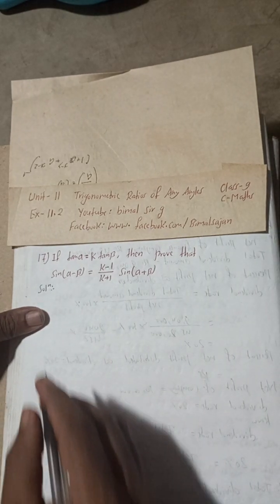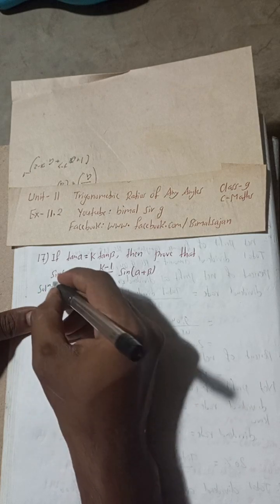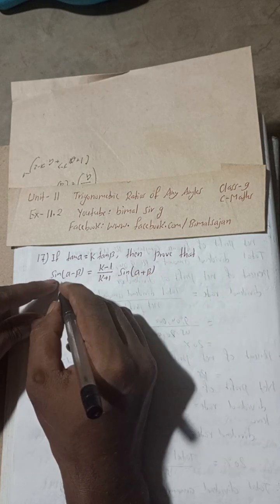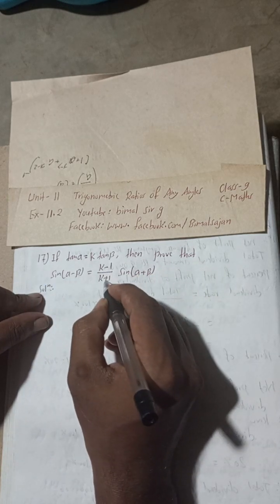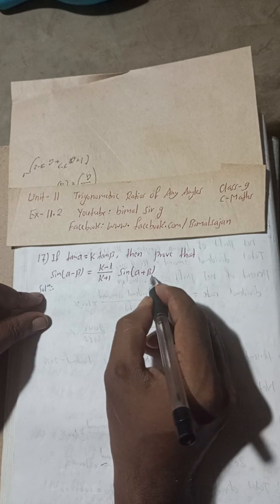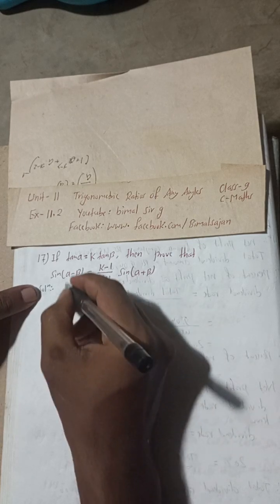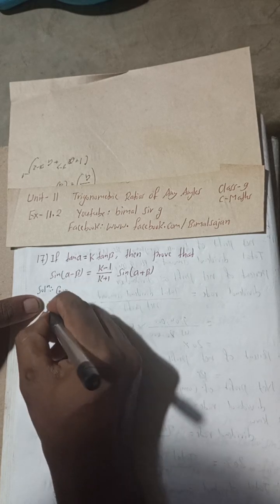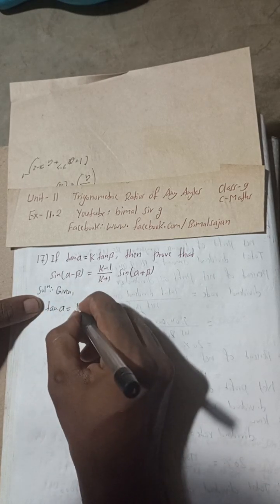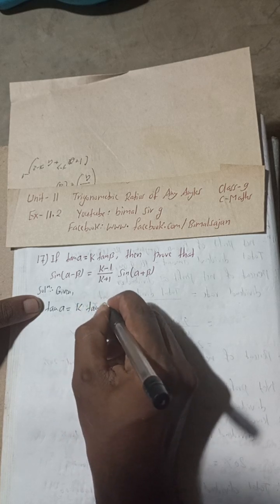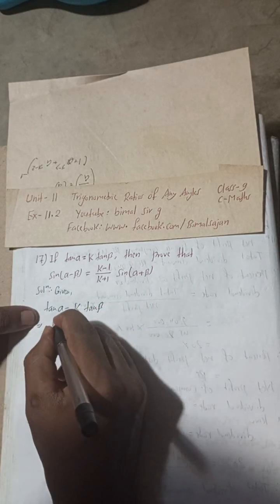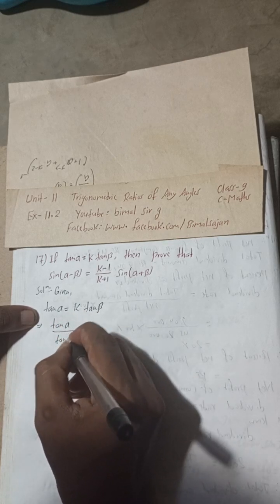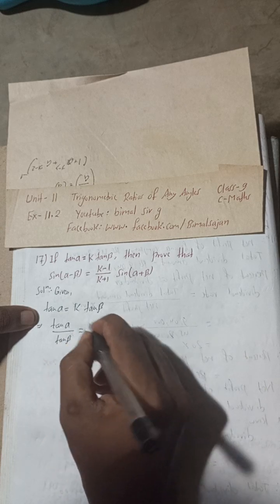Let's begin the solution. Now, if tan α is equal to k tan β, then prove that sin(α − β) is equal to (k − 1)/(k + 1) · sin(α + β). So here, the given part is: tan α = k tan β. And this can be written as tan α / tan β = k.